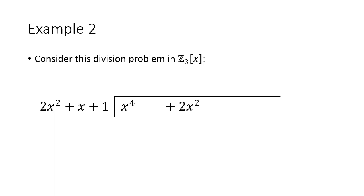Let's do one more example. This time, the coefficients are in Z3 of x — that is, we're working in Z3 brackets x. Our leading coefficient is again 2. In Z3, 2 inverse is 2, because 2 times 2 is 4, which is the same as 1 mod 3. So when we divide by 2, that's the same as multiplying by 2.